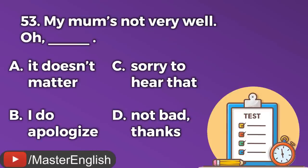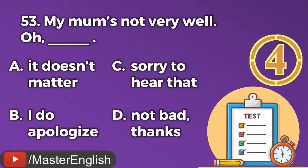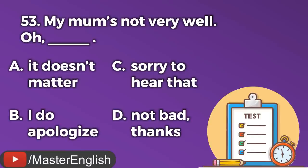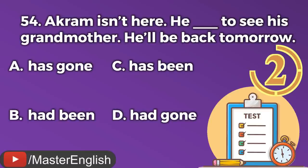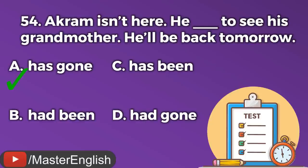Question number fifty-three. My mom's not very well. ___. A: It doesn't matter. B: I do apologize. C: Sorry to hear that. D: Not bad, thanks. The correct answer is C: Sorry to hear that. Question number fifty-four. Akram isn't here. He ___ to see his grandmother. He'll be back tomorrow. A: Has gone. B: Had been. C: Has been. D: Had gone. The correct answer is A: Has gone. He has gone to see his grandmother.